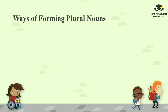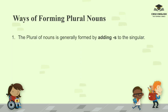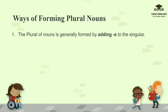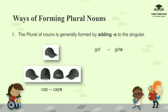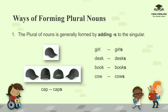Now we'll discuss different ways of forming plural nouns. Number one: the plural of nouns is generally formed by adding S to the singular. For example: cap, caps; girl, girls; desk, desks; book, books; cow, cows; game, games.